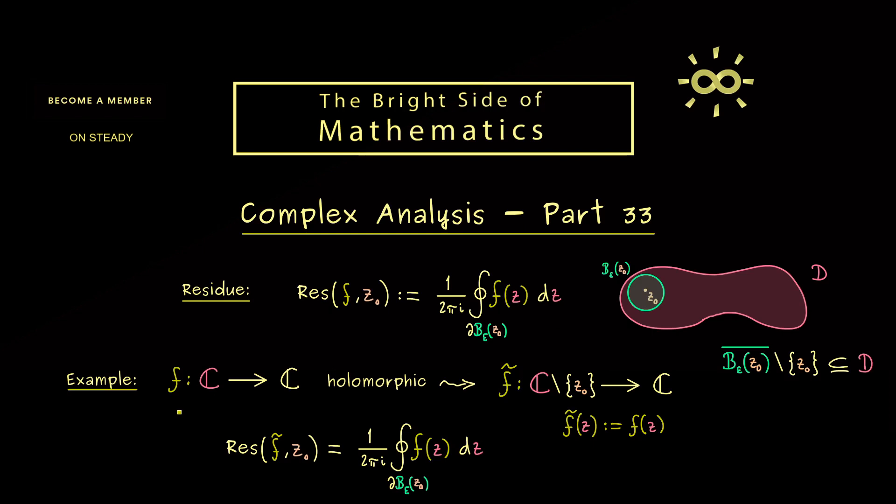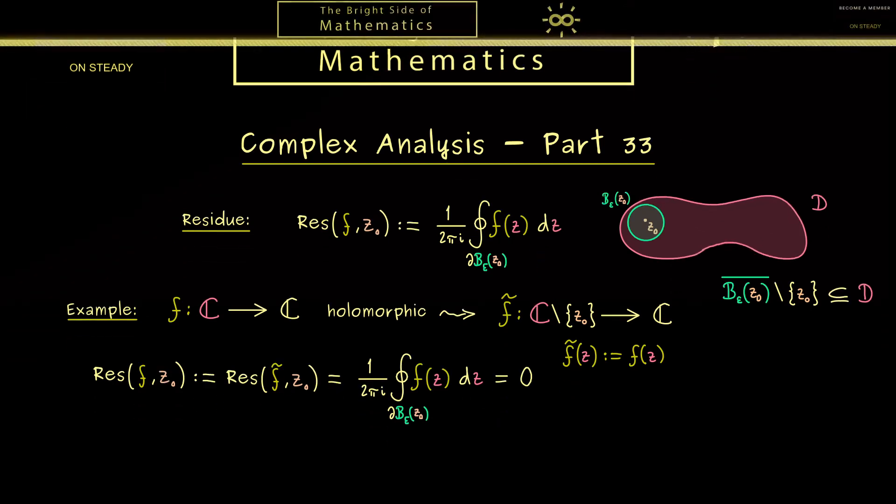This means now for this function we have an isolated singularity and we can talk about the residue. So the question here is what is the residue of f tilde at z0. This is not hard at all because we can calculate this contour integral. The integral does not care if we put in f or f tilde because it's simply the same. However, for the function f we have Cauchy's theorem which essentially tells us that every closed contour integral gives us the value 0. Therefore also here we get out 0 for the residue. So if we don't have an isolated singularity at z0 the residue simply vanishes. You can see this as a definition—we can extend the notion of residue also for points inside the domain D.